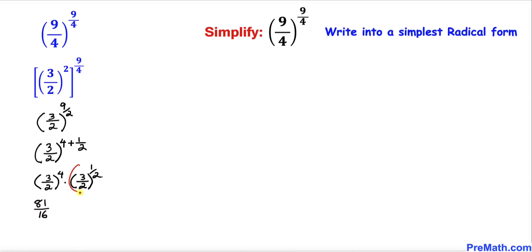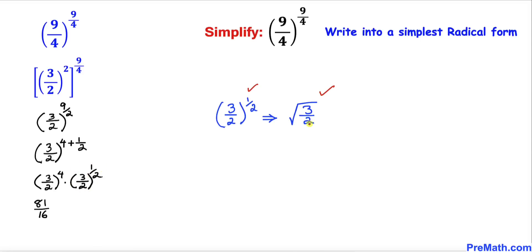Now let's focus on (3/2)^(1/2), which can be written in radical form as the square root of 3/2. In turn, this could be written as √3 divided by √2. Therefore I am going to replace this part by √3 divided by √2.